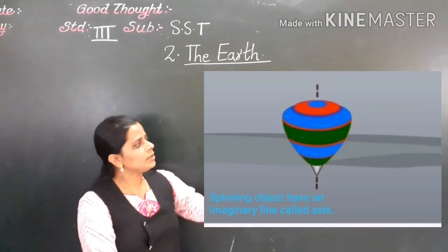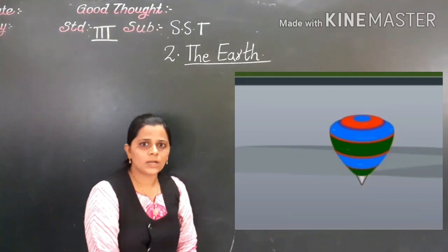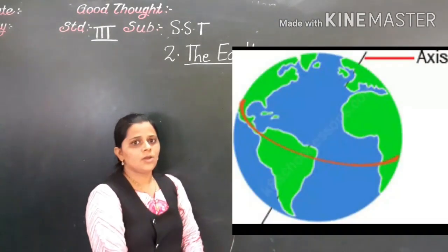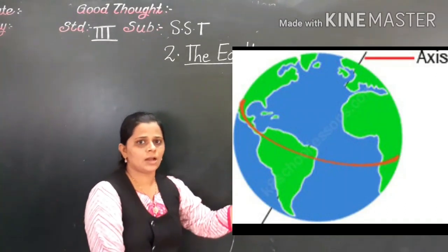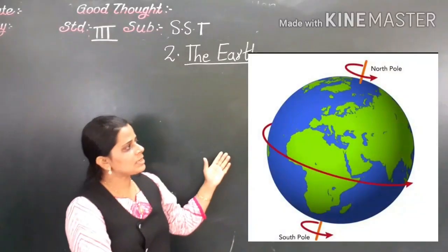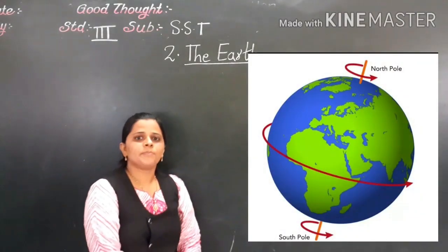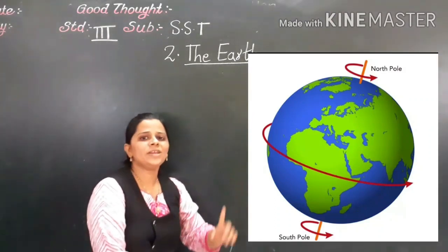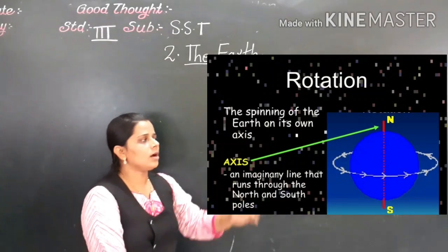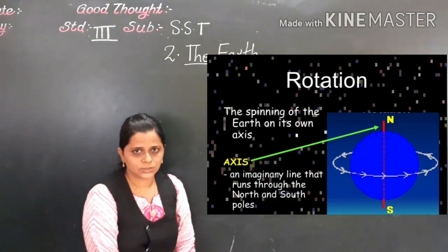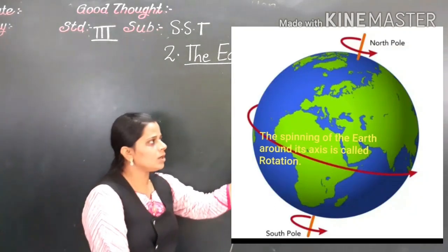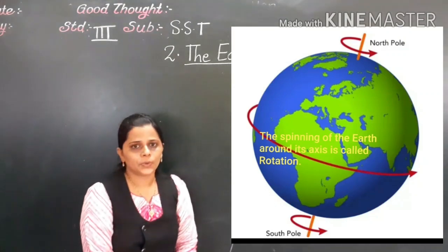When the spinning top stops spinning, the line vanishes. The same happens with the earth. When the earth spins around its axis, there is a formation of an axis which passes through the North Pole and South Pole. Because of the spinning of the earth around its axis, there is rotation. Spinning of the earth around its axis is called rotation.